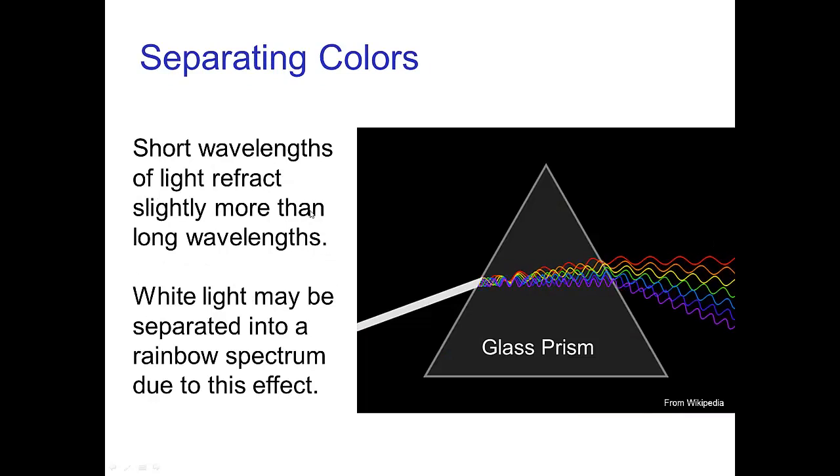To be more specific, the short wavelengths of light, which is the blue side of the spectrum, refract slightly more than the long wavelengths, which are the red side of the spectrum. This creates this separation of colors.